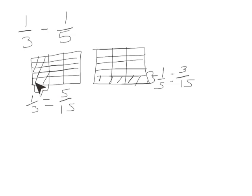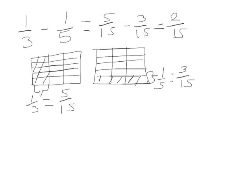My fraction model shows that 1 third is exactly the same as 5 fifteenths. 1 fifth is equivalent to 3 fifteenths. So my new subtraction problem would be 5 fifteenths minus 3 fifteenths, giving the answer 2 fifteenths.